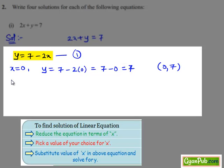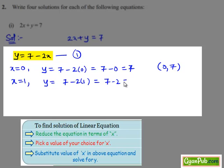Now, let us put x equals to 1 in equation number 1. Then we get y equals to 7 minus 2 times 1, that equals to 7 minus 2, which is equal to 5. Hence, the ordered pair (1, 5) is also the solution of equation number 1.